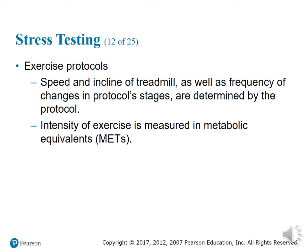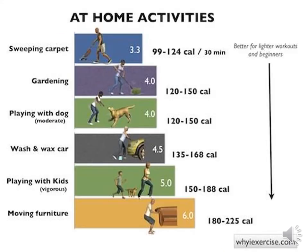METs — metabolic equivalents — are like your horsepower: how much energy it takes to complete something. For example, sweeping, playing with your dog, playing with your kids, or moving furniture all require different METs. Vacuuming requires about 3.3 METs, playing with the dog about 4 METs, playing with the kids about 5 METs, and moving furniture burns even more energy.